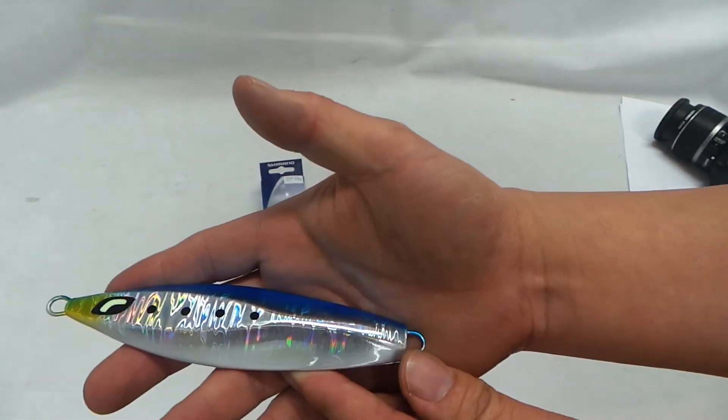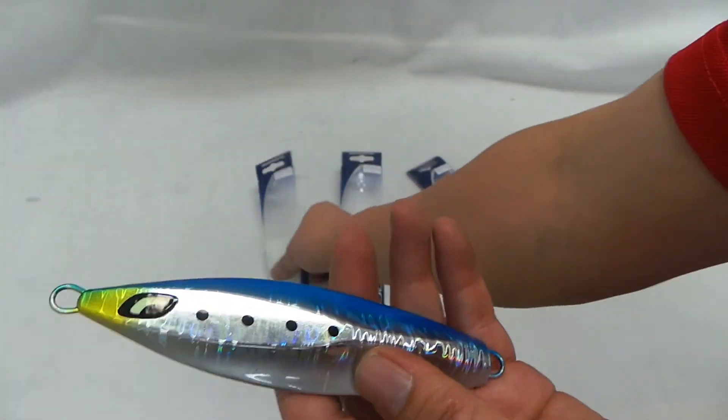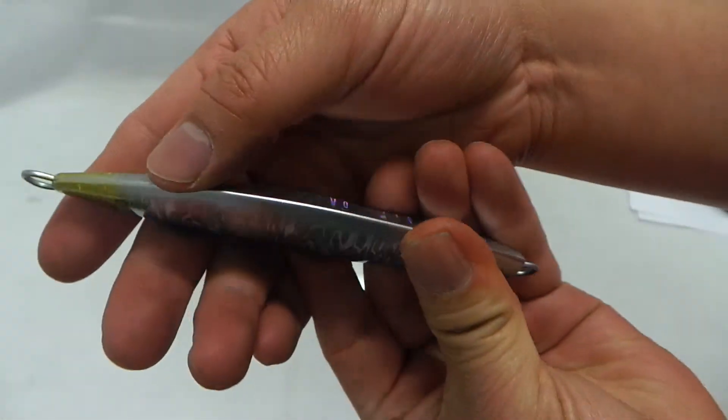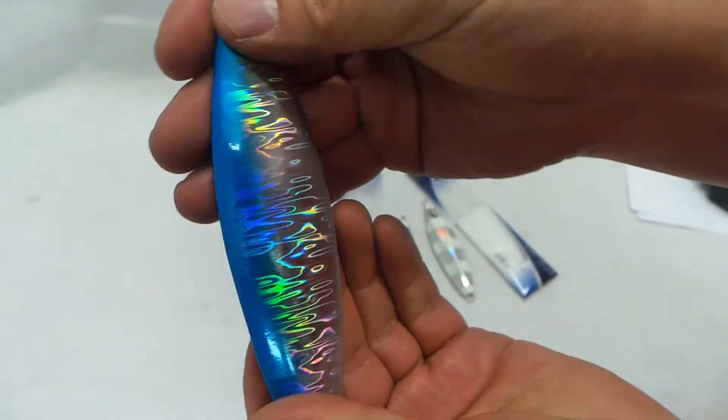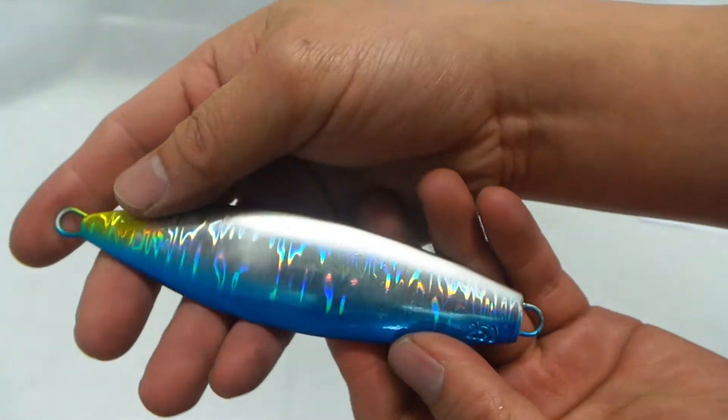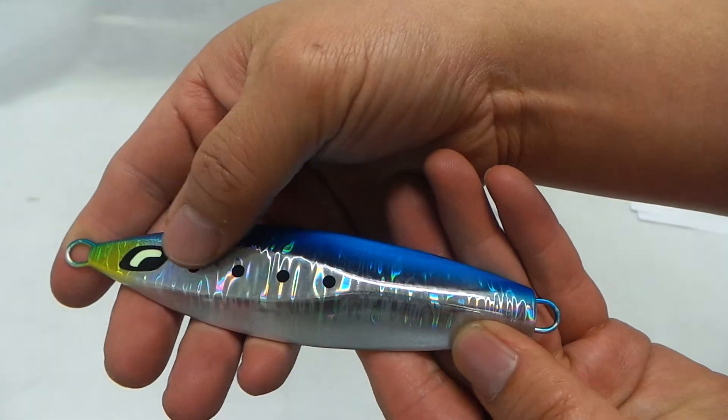This color is the sardine. Sardine. And the other side is of course that. Beautiful isn't it? It's like an oyster shell color. Very nice.